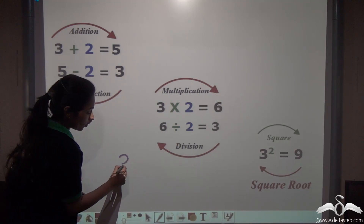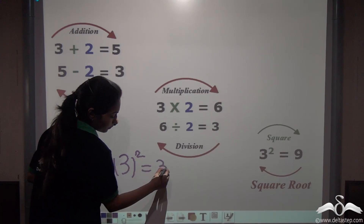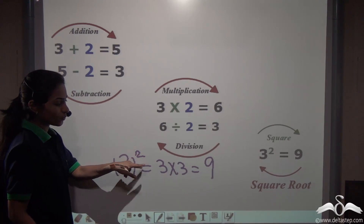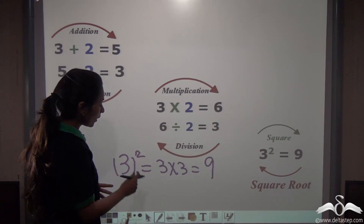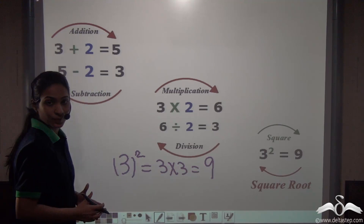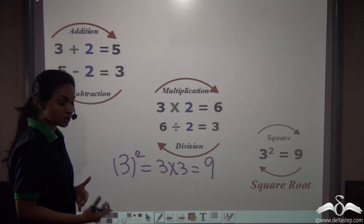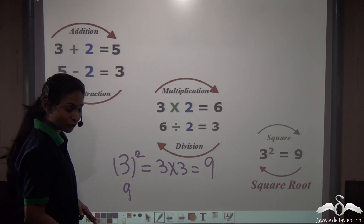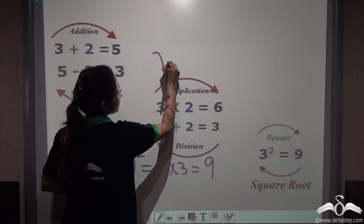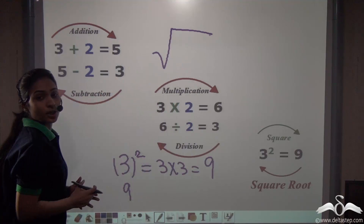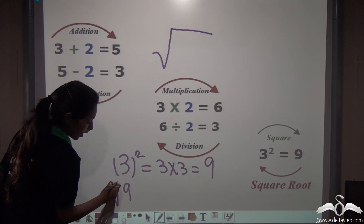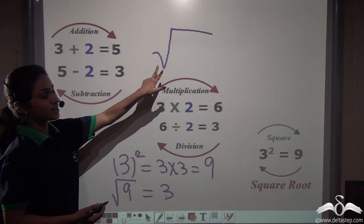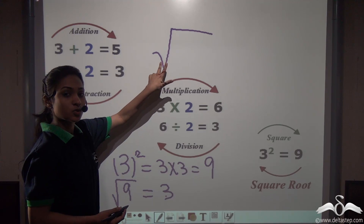You know how to find out 3 squared: 3 into 3 gives me 9, so 3 squared is 9. Now how do I get 3 back from 9? I will square root 9 to find out 3. We use this symbol to denote square root, so square root of 9 will give me 3.